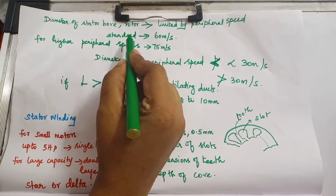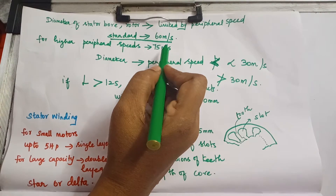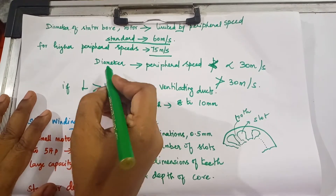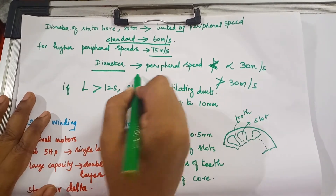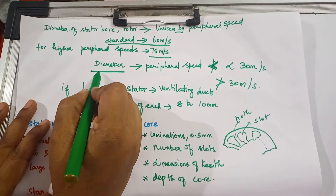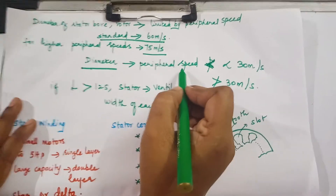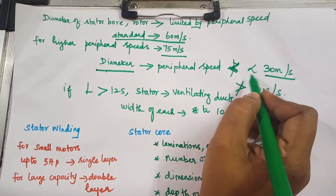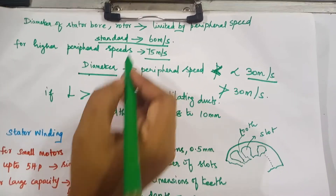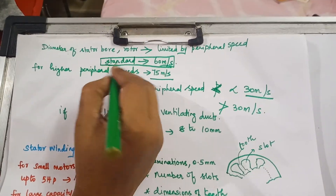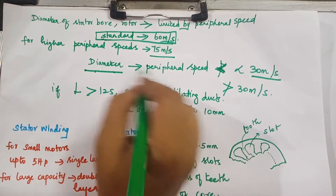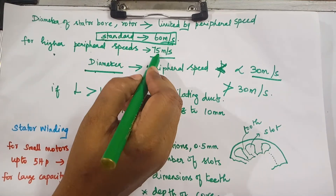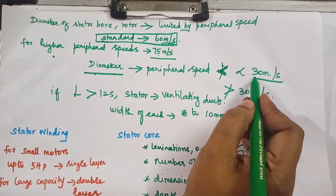The standard value for peripheral speed is 60 meters per second. For higher peripheral speeds, it can go up to 75 meters per second. Normally, we have to select the diameter in such a way that the peripheral speed should not exceed 30 meters per second. This is the standard value. If you are increasing the power rating, you can go up to 75 meters per second; otherwise, it should be less than 30 meters per second.